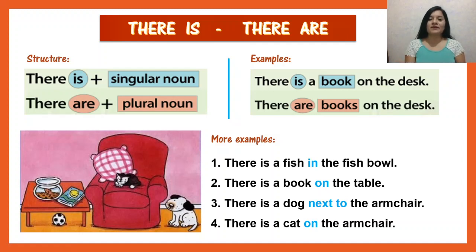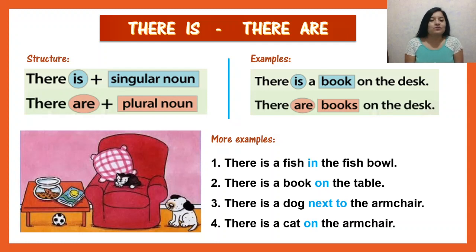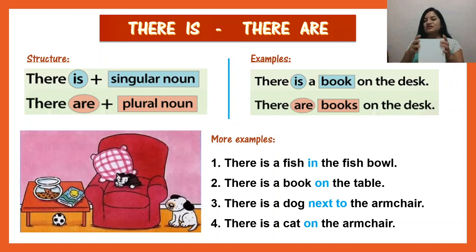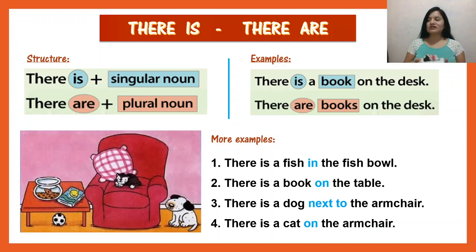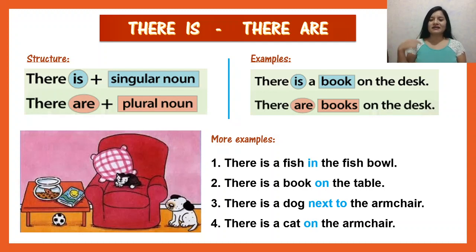So remember, 'there is' and 'there are' in Spanish means 'hay'. Now you can find more examples around your house. Remember my box and my doll? I can say, in this moment, there is a doll on the box. Now it's your turn to create more sentences using 'there is' and 'there are'. Bye-bye! See you next class.